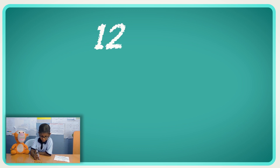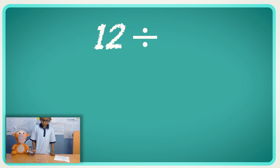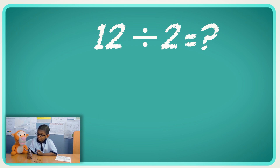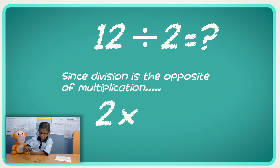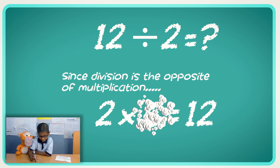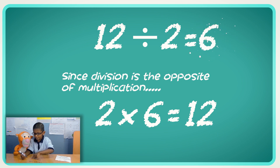Divide it. What's that sign? That is a division sign. So we divide twelve by two and it equals a question mark, because we don't know what it is. Two times what is twelve? Two times six. Yes. So twelve divided by two is six. Yeah. Wow.